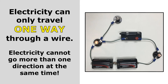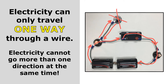Electricity can only travel one way through a wire — it cannot go more than one direction at the same time. So in this circuit, electricity can come out of the battery and go around the circuit in one direction, and you see that those light bulbs are working. But the light bulb at the top is not working, because for electricity to reach it and return to the other side of the battery, it would have to go both ways along that wire at the same time, and it cannot do that. So this light bulb is not part of the circuit and it will never glow.